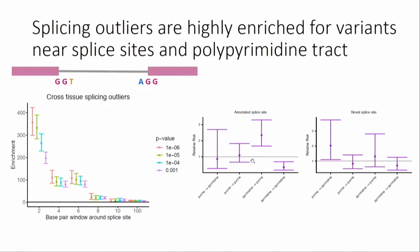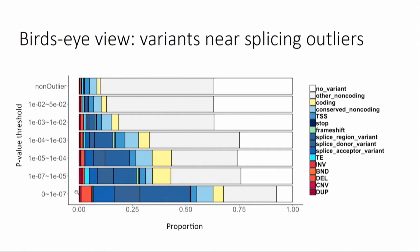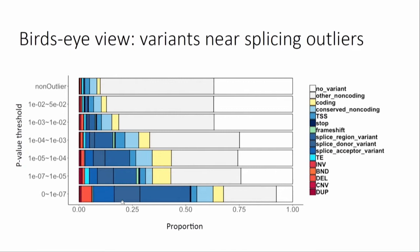The alternative splicing outliers look pretty different from the expression outliers. The alternative splicing outliers have a lot fewer structural variants and a lot more enrichment of variants that occur right in the splice donor or acceptor. We also see a number of coding variants that affect splicing. These different types of outliers really are pointing us to different types of functional rare variants in these individuals.